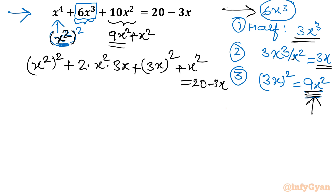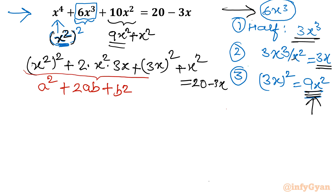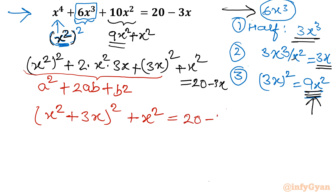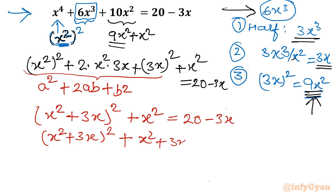So we have 2·x²·3x, and writing 9x² as (3x)² — what is left is x². So the left side becomes: x² whole square plus 2·(x²)·(3x) plus (3x)², plus x², and the right-hand side is unchanged: 20 minus 3x. Now you can see — that is a² plus 2ab plus b², so the first three terms combine as (x² + 3x)². So we write: (x² + 3x)² plus x² equals 20 minus 3x. Moving all terms to the left: (x² + 3x)² plus x² plus 3x minus 20 equals 0.